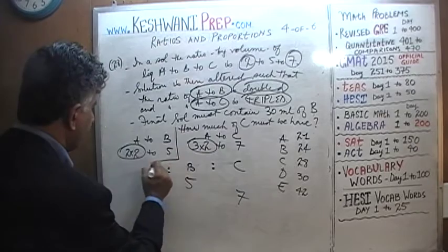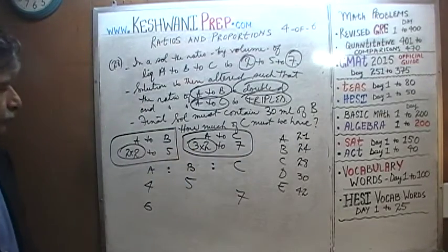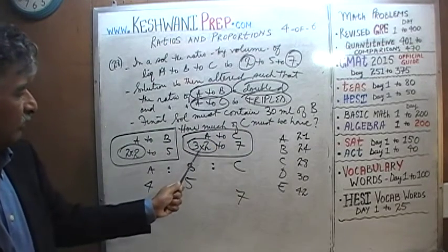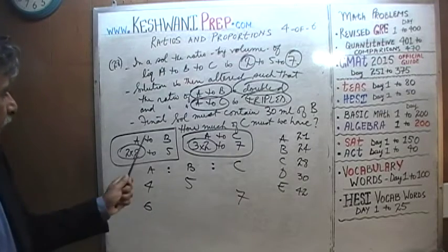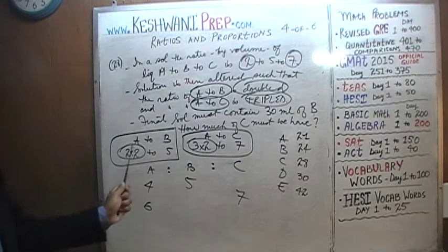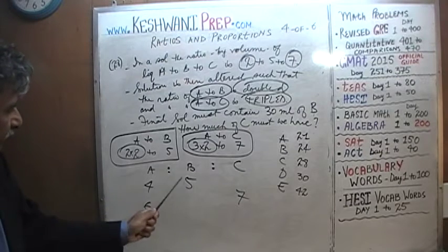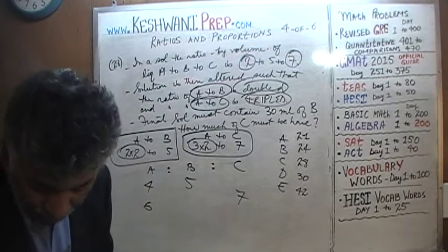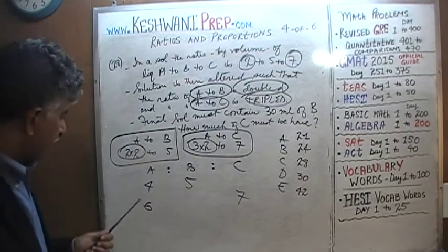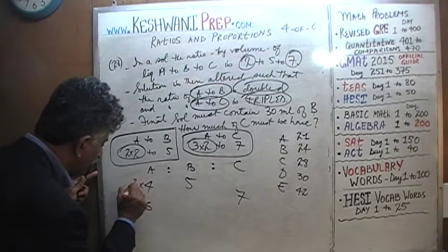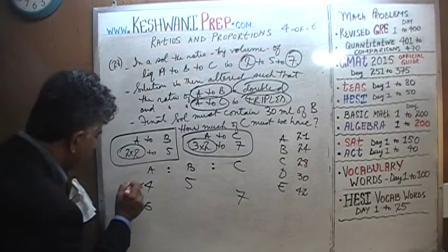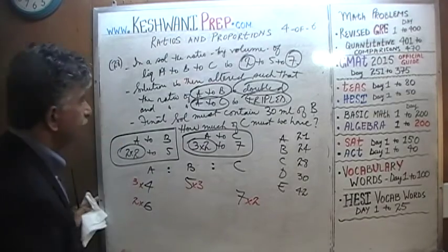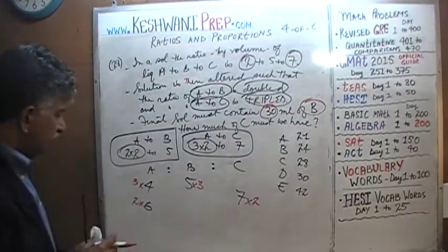We need A to be consistent across both ratios. A is 4 in the first and 6 in the second. The LCM of 4 and 6 is 12. Multiply the first ratio (4 to 5) by 3 to get 12 to 15. Multiply the second ratio (6 to 7) by 2 to get 12 to 14. So A to B to C = 12 to 15 to 14.